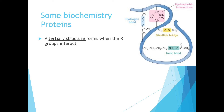A tertiary structure, or third level of structure, forms when the R groups of amino acids interact. We compare R groups of different amino acids and look at the interactions: hydrogen bonds between two R groups, hydrophobic interactions or dispersion forces between nonpolar R groups, a covalent bond between two sulfurs called a disulfide bridge, and an ionic bond between a cationic and anionic R group. When R groups form these additional interactions, the resulting structure is called the tertiary structure — it can be due to intermolecular forces or covalent bonds.